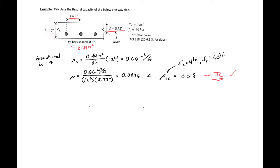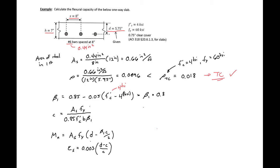I will then find our flexural strength using the same procedure that we did for beams. We'll use the same equations. So we'll first need to find our beta 1. For us, we have 4 KSI concrete, so our beta 1 is equal to 0.85.